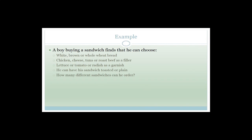A boy buying a sandwich can choose between white, brown, and whole wheat bread — three options. He can choose chicken, cheese, tuna, or roast beef as a filler — four options. Lettuce, tomato, or radish as a garnish — three options. Toasted or plain — two options. How many different sandwiches can he order? 3 × 4 × 3 × 2 = 72 possible different sandwiches.